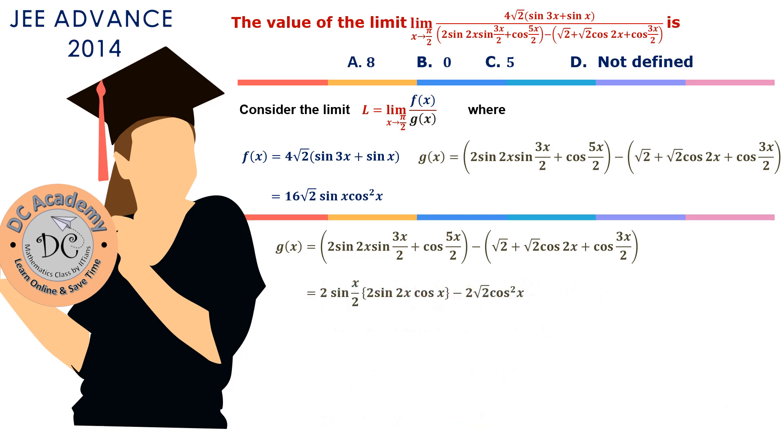Let's change sin 2x to 2 sin x cos x. Therefore, we can write it as 8 sin(x/2) sin x cos² x - 2√2 cos² x. Cos² x can be taken out as a common factor. So we take 2 cos² x common: 2 cos² x [4 sin(x/2) sin x - √2].